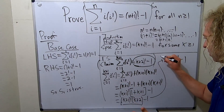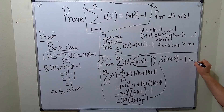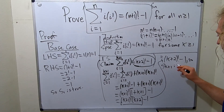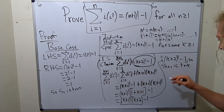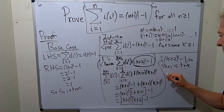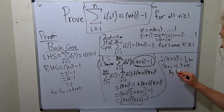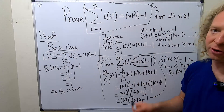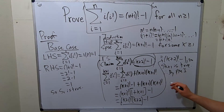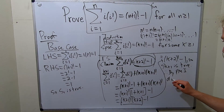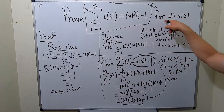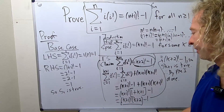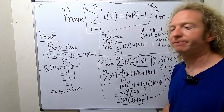So we showed it's true — S sub k plus 1 is true. Therefore, by PMI, the principle of mathematical induction, we are done. The statement is true for all positive integers n greater than or equal to 1.